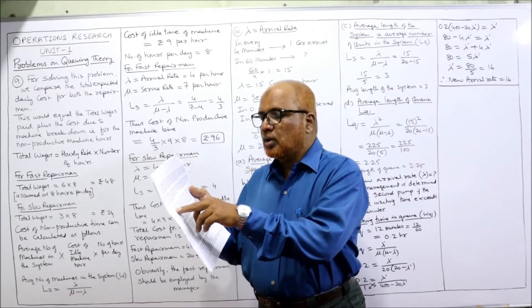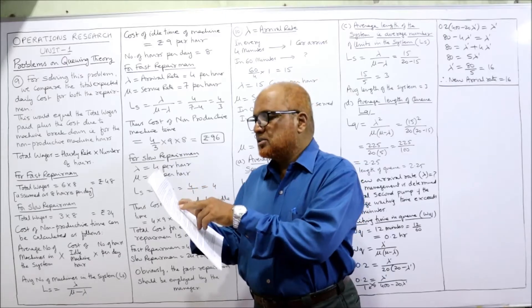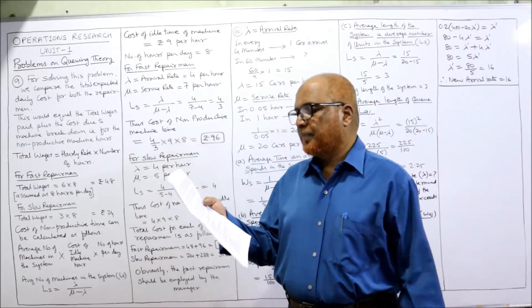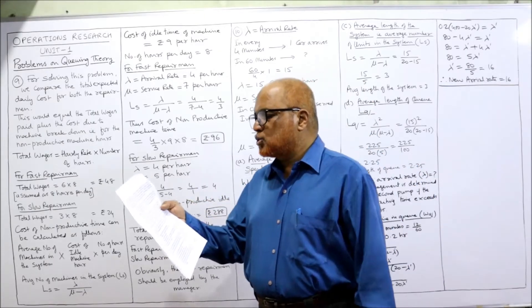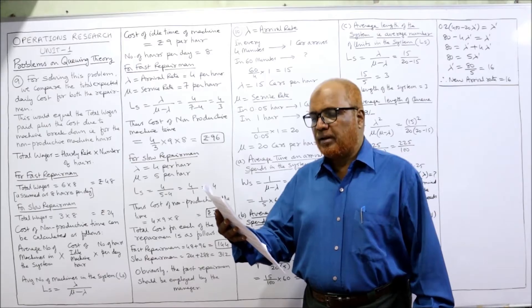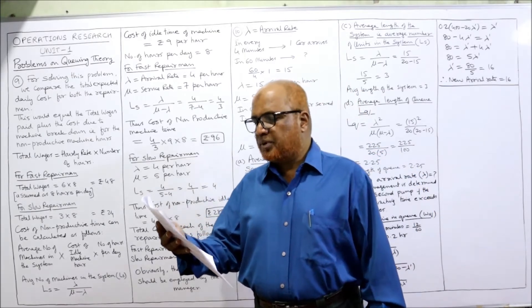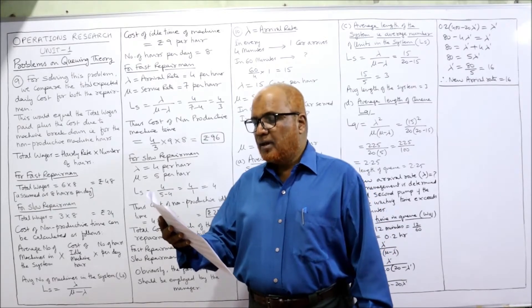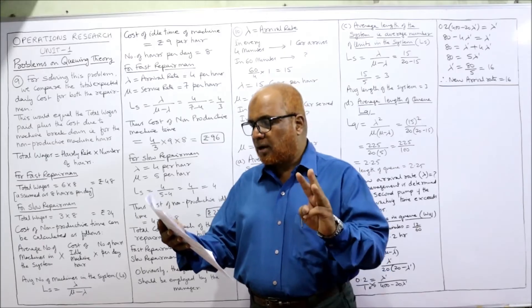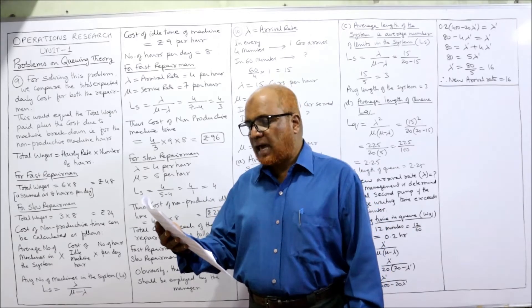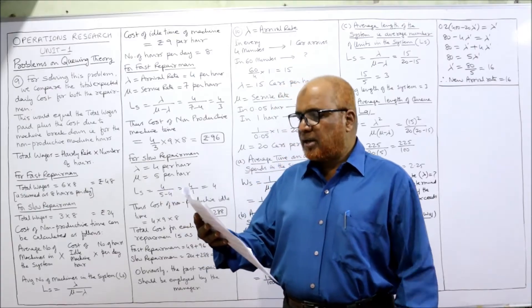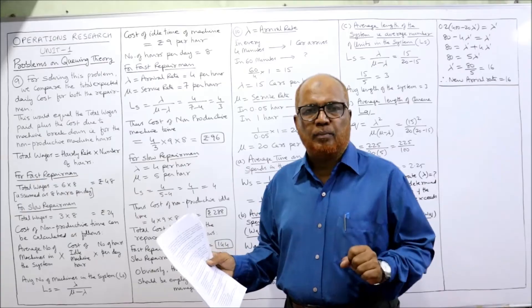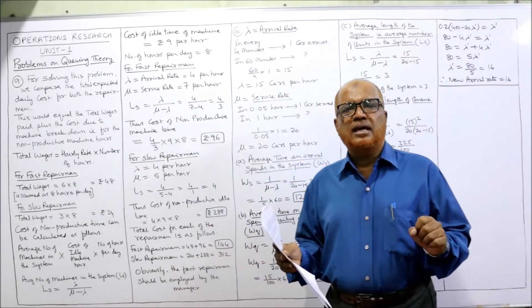The company has the option of choosing either a fast or a slow repairman. The faster repairman charges six rupees per hour and will repair machines at an average rate of seven per hour. The slow repairman charges three rupees per hour but will repair machines at an average rate of five per hour. Which repairman should be hired?